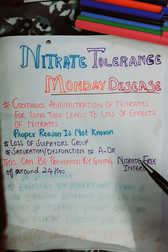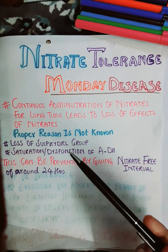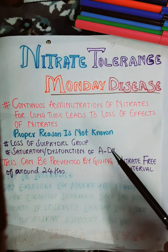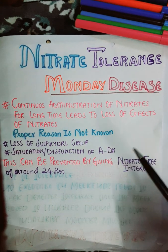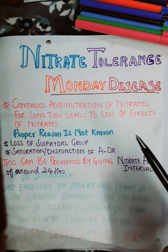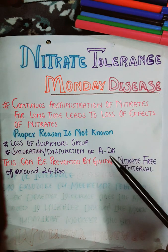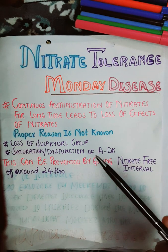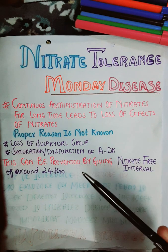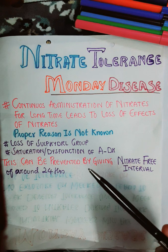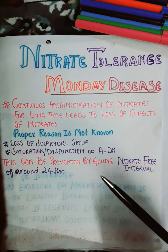Some researchers also propose that there is dysfunction of the aldehyde dehydrogenase enzyme. Aldehyde dehydrogenase is required for the conversion of nitrates to nitric oxide. When aldehyde dehydrogenase does not function properly or becomes saturated, nitrates will not be converted to nitric oxide, hence leading to tolerance.